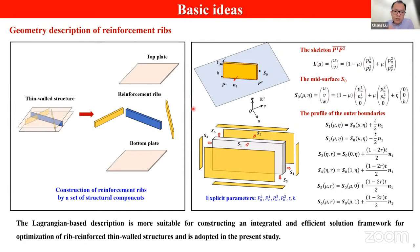The key idea of our approach is to treat the ribbons as individual components. For flat shell structures, we have explicit geometry information of each edge of the shell component, and the movement and deformation of the ribbons can be driven directly by efficient shape sensitivity.